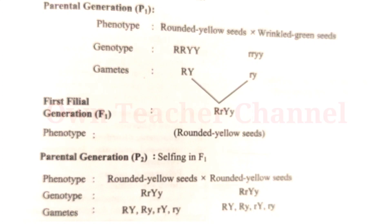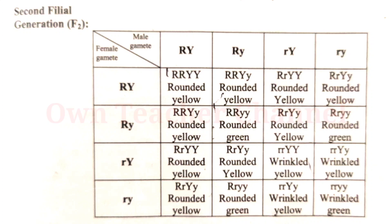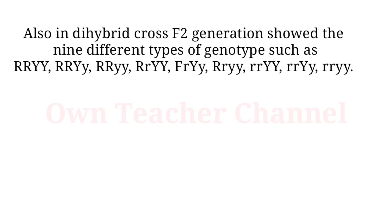When plants of F1 generation of the dihybrid cross are self-fertilized to obtain F2 generation, they produced four types of gametes: capital RY, capital R small y, small r capital Y, and small ry. F2 generation was formed by fusion of four types of male and four types of female gametes, producing plants with phenotypes: round yellow, wrinkled yellow, round green, and wrinkled green. Two were parental combinations (round yellow and wrinkled green) and two were new combinations (wrinkled yellow and round green).